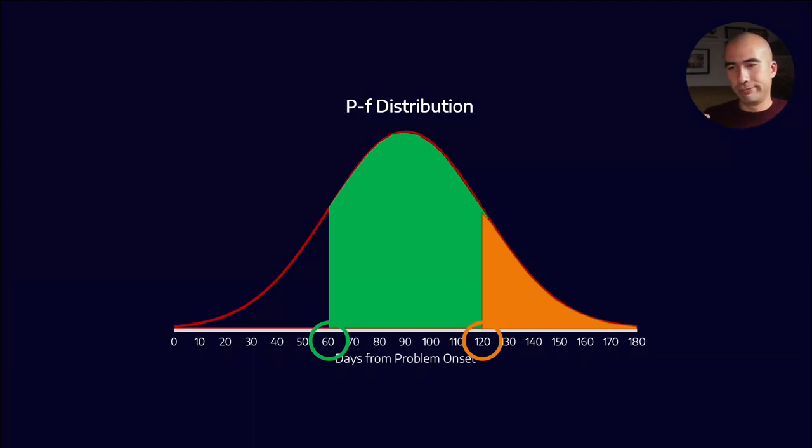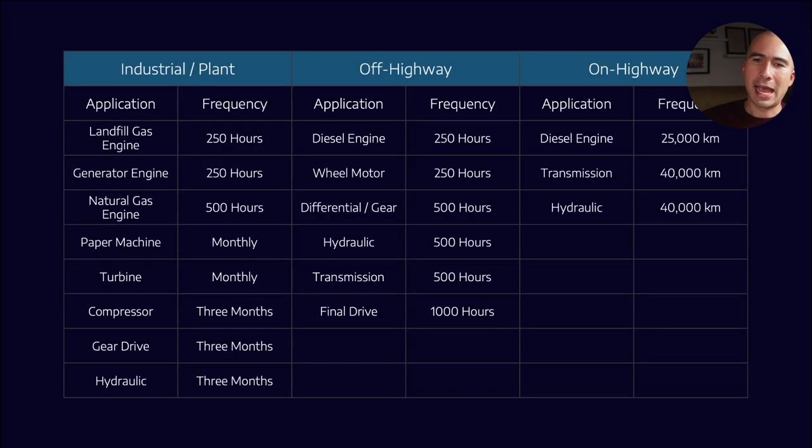It's almost impossible to do this kind of high-level statistical analysis for every bit of kit. And so, generally, oil companies provide us with handy rules of thumb. For different kinds of equipment, how often do we want to be sampling? And this takes into account both the condition of the equipment as well as the condition of the oil. Because we're not just sampling to look at wear metals, we're also looking at things like additives, contaminants, as well as the oil degradation.